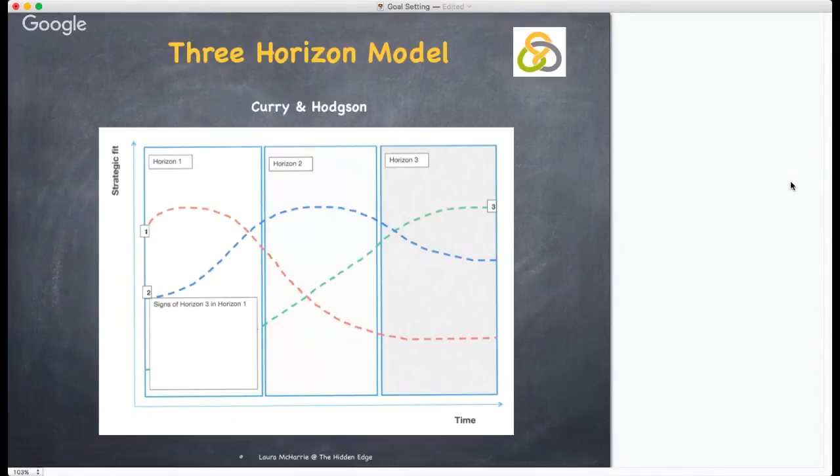Look back across the three horizons you have filled in and think about what might be happening in the present that could move you forward towards your desired future state. What signals are there in what you are doing now so that you can start to make changes. Record those findings.